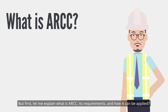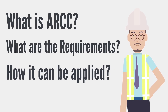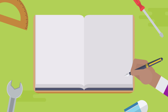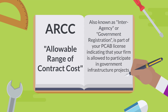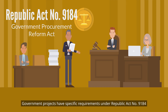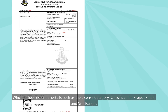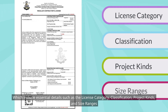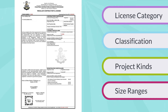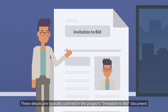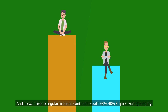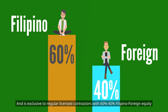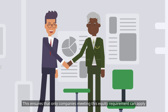Let me explain what ARCC is, its requirements, and how it can be applied. The Allowable Range of Contract Cost, or ARCC, also known as Interagency or Government Registration, is part of your PCAB license indicating that your firm is allowed to participate in government infrastructure projects. Government projects have specific requirements under Republic Act Number 9184, which include essential details such as the license category, classification, project kinds, and size ranges. These details are typically outlined in the project's invitation to bid document. The ARCC is valid for three years and is exclusive to regular license contractors with 60-40% Filipino-foreign equity. This ensures that only companies meeting this equity requirement can apply.